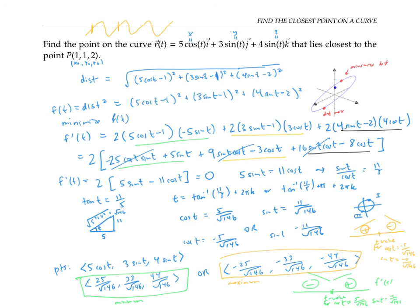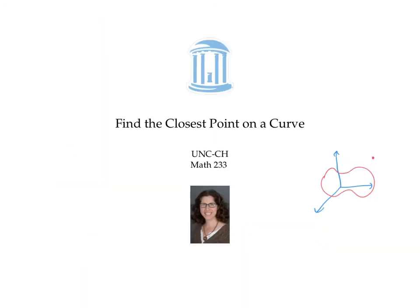One last detail: I wrote my points as vectors because I was thinking about the vector valued function notation. That's fine as long as you're thinking of the vector as starting at the origin, with its tip components giving the point in three-space. But when talking about points, it might be less confusing to use point notation with parentheses rather than angle brackets. This video used standard optimization techniques to find the point on a curve at minimum distance from another given point, and at maximum distance from that given point.